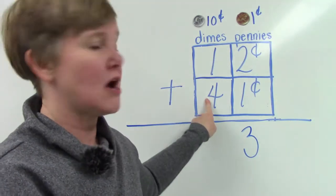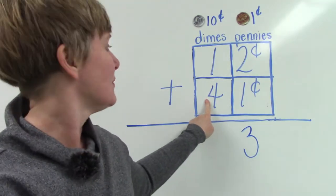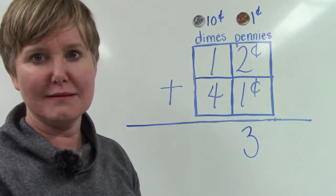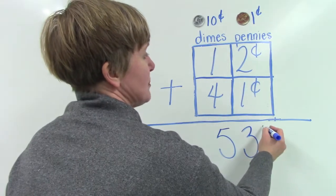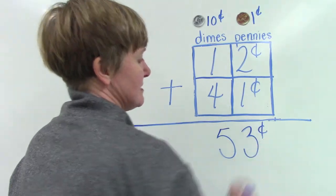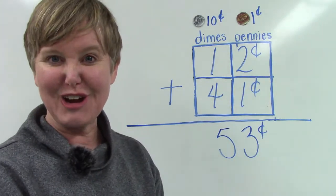And then we're going to move over to the dimes column or the tens place. Four plus one. Well, that's easy as well. It's five. Twelve cents plus forty-one cents is fifty-three cents.